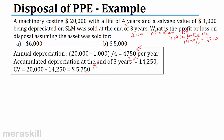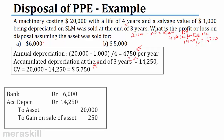In the first case, carrying value is $5,750 and it was sold for $6,000, so you make a profit of $250. The journal entry: debit bank $6,000, debit accumulated depreciation $14,250, credit asset $20,000, and credit profit on sale of asset $250. Profits are credits and losses are debits.